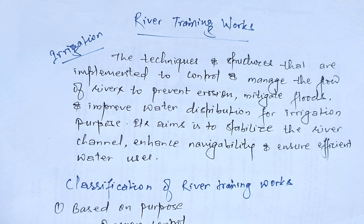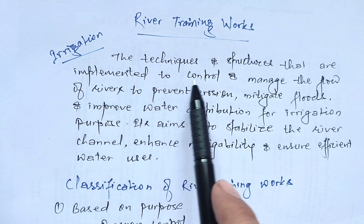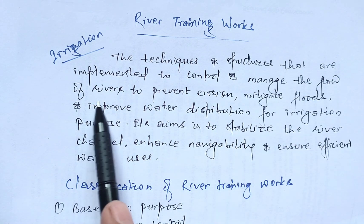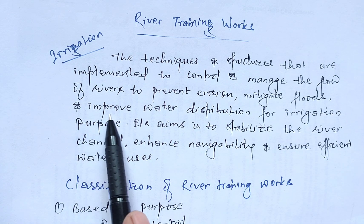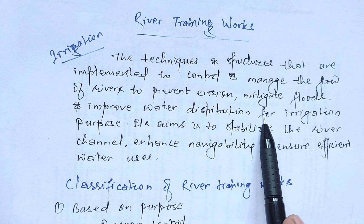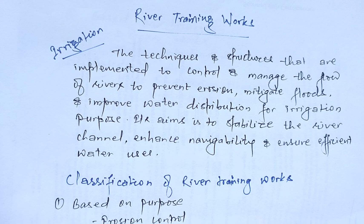So let's start. What is river training? River training refers to the structures and techniques implemented to control and manage the flow of rivers, to prevent erosion, mitigate floods, and improve water distribution for irrigation purposes. Its aim is to stabilize the river channel, enhance navigability, and ensure efficient water usage.